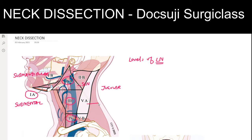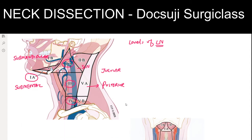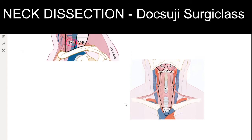Level 5 is called the posterior triangle — the lymph nodes present in the posterior triangle. Level 6 is the central compartment or anterior compartment, which includes the pretracheal, paratracheal, prelaryngeal, and paralaryngeal lymph nodes.